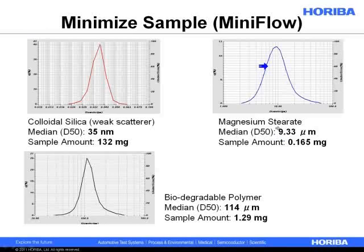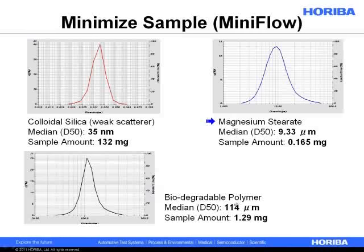When I say reasonably accurate, I don't mean the median value would double if you added more — it might shift to 9.5 microns and stabilize there. The difference between 9.3 and 9.5 micron median, for a lot of applications, isn't that important. The final example is a biodegradable polymer — I think it was PLGA — with a larger median size and weaker scattering efficiency than magnesium stearate, so we had to add a little bit more material: 1.29 milligrams as opposed to 0.165.